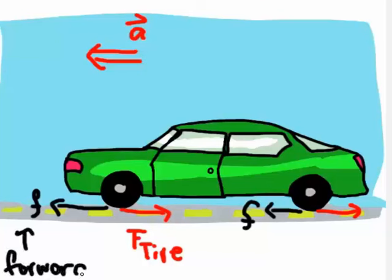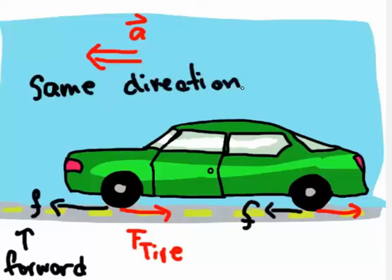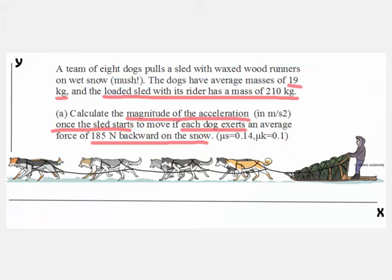It's always important to draw the free body diagram and analyze the direction of the frictional force. It's not always opposite to the motion. Alright. So what does this have to do with our dog sled problem?